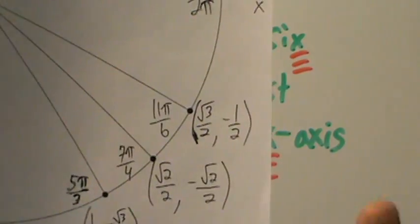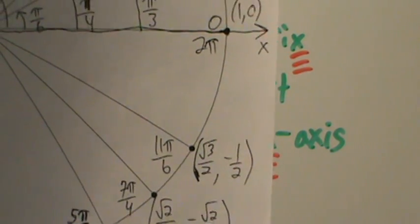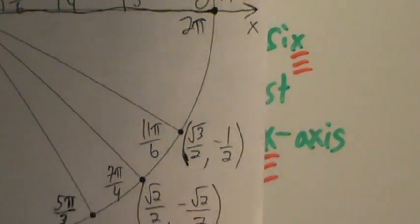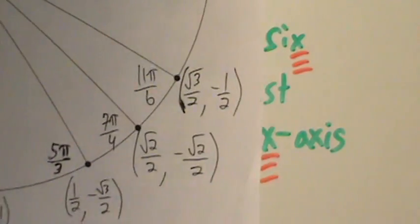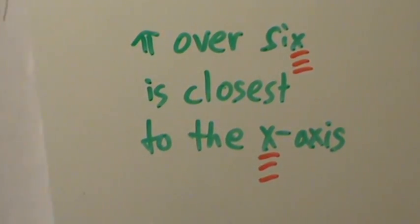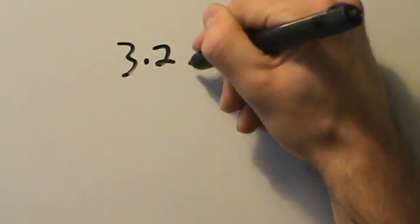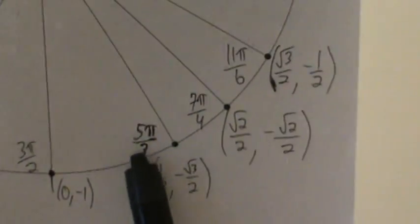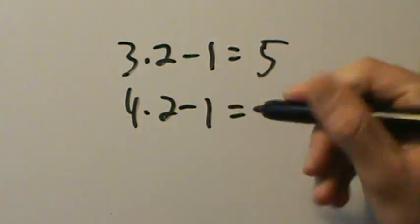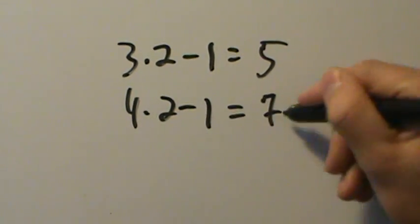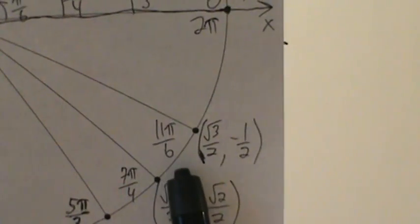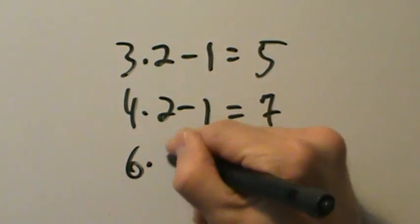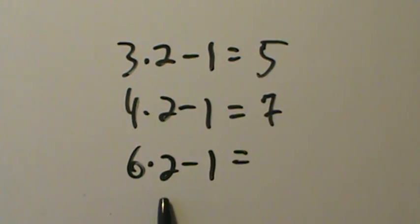For the fourth quadrant numerators, multiply the denominator by 2 and subtract 1: 3 times 2 minus 1 equals 5, so the over-3 angle in quadrant 4 is 5 pi over 3. 4 times 2 minus 1 equals 7, giving 7 pi over 4. 6 times 2 minus 1 equals 11, giving 11 pi over 6.